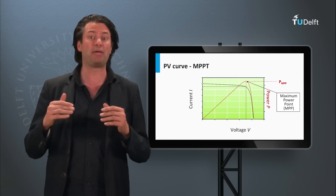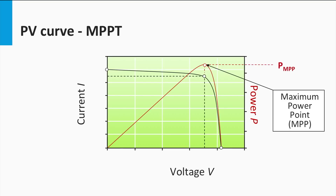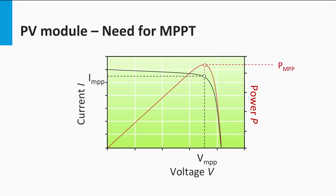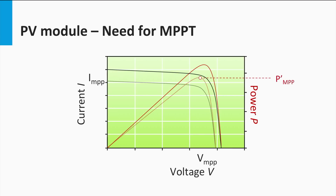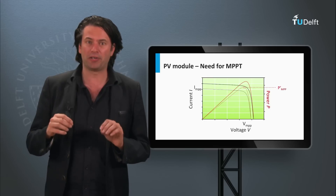The maximum power point corresponds to the peak of the PV curve or the knee of the IV curve. The simplest way to do this is to force the voltage of the PV module to be that at the maximum power point, or regulate the current to the right amount using converters. But what if, after forcing the PV module to operate at the maximum power point, the ambient conditions like irradiance or temperature change and in turn cause the IV-PV curve to change as well? This would mean that the old MPP is no longer valid. Thus, to be continuously at the maximum power point at all times, we would need to track any such changes in the IV curve and find out the new MPP. This process is called maximum power point tracking, or MPPT.